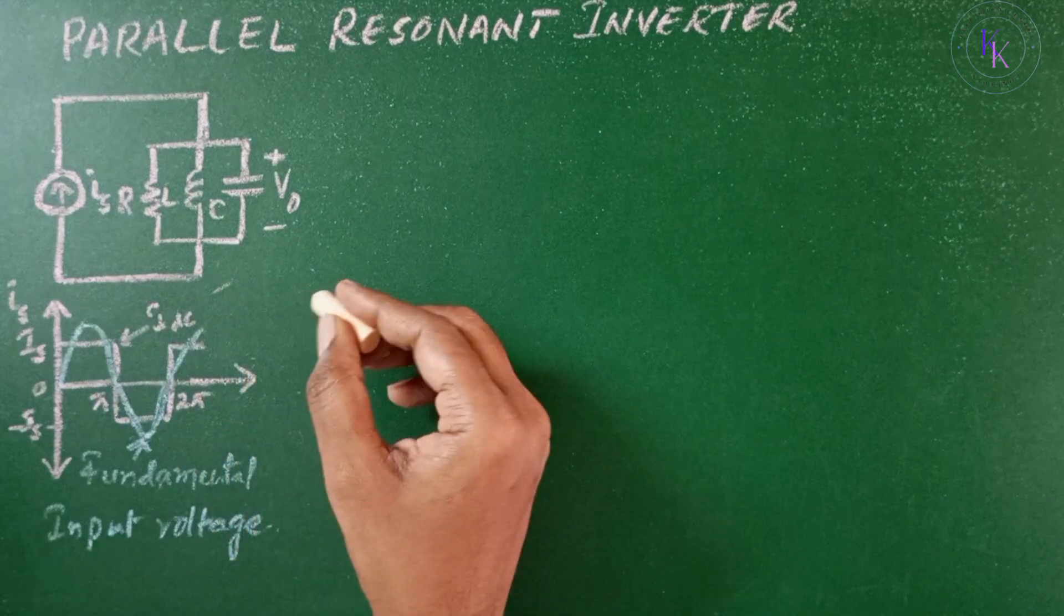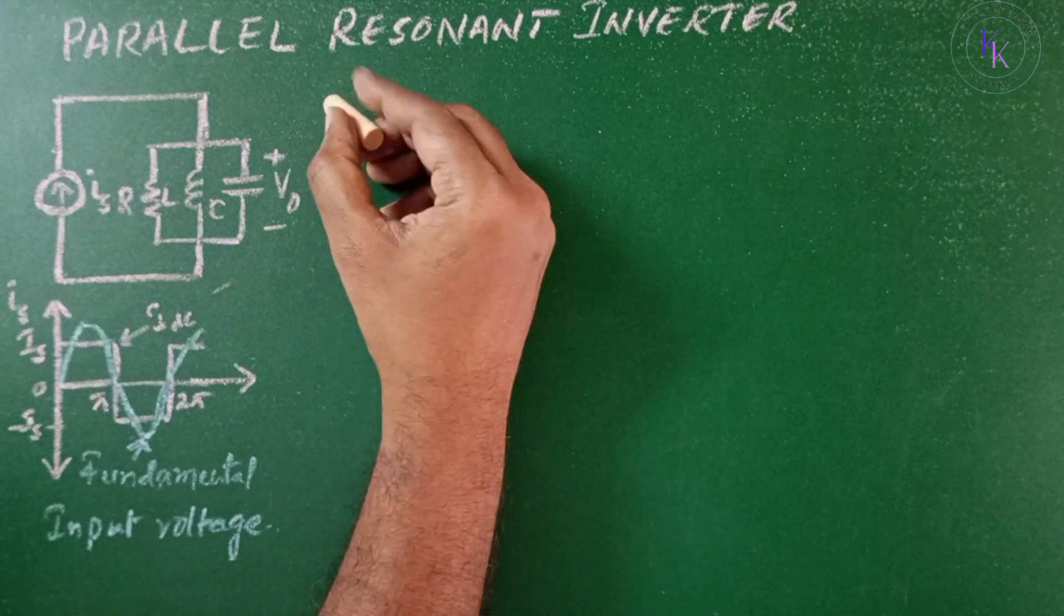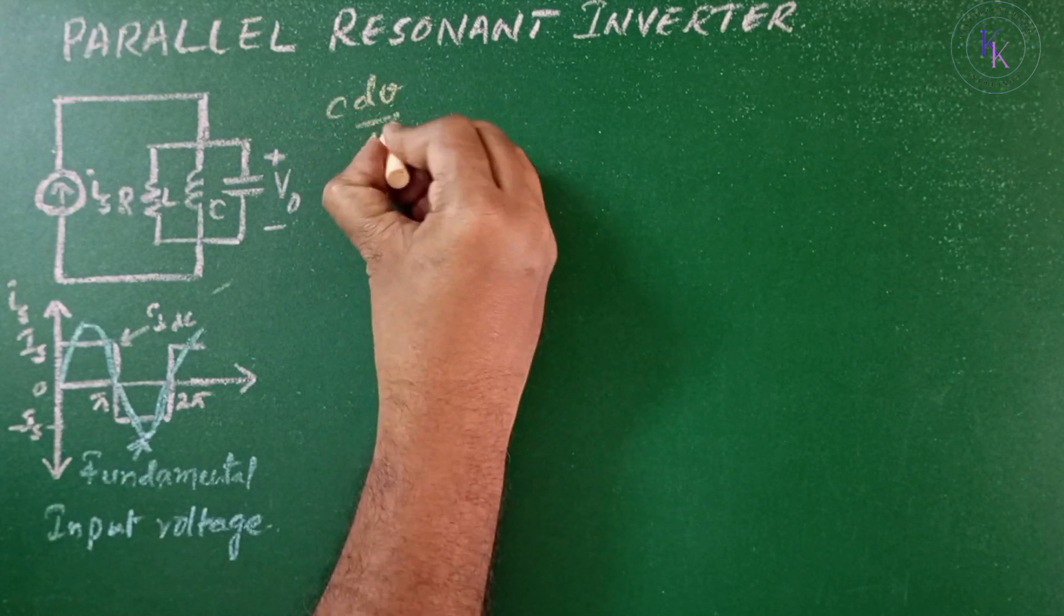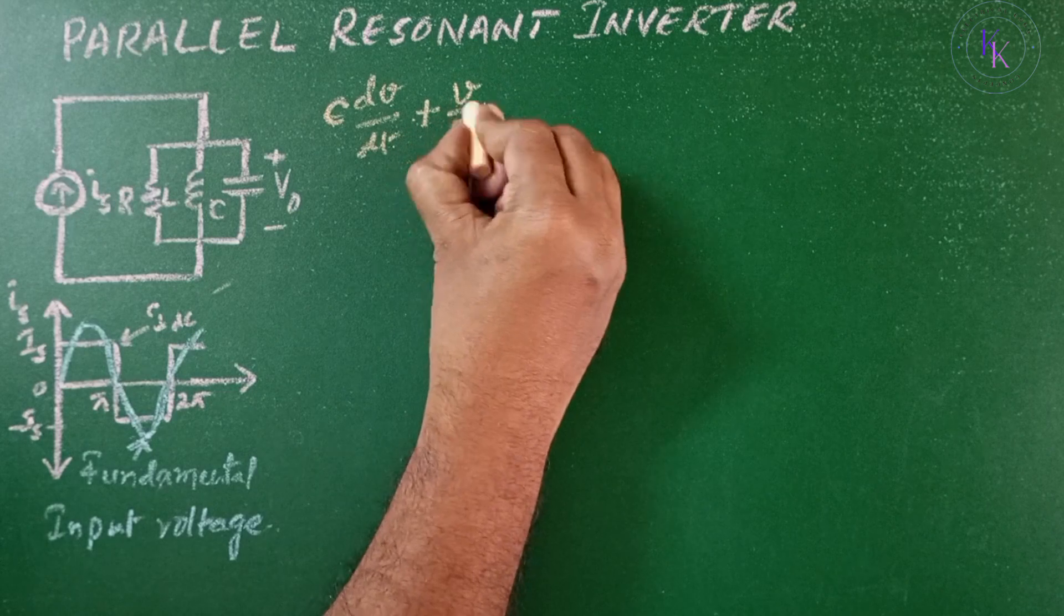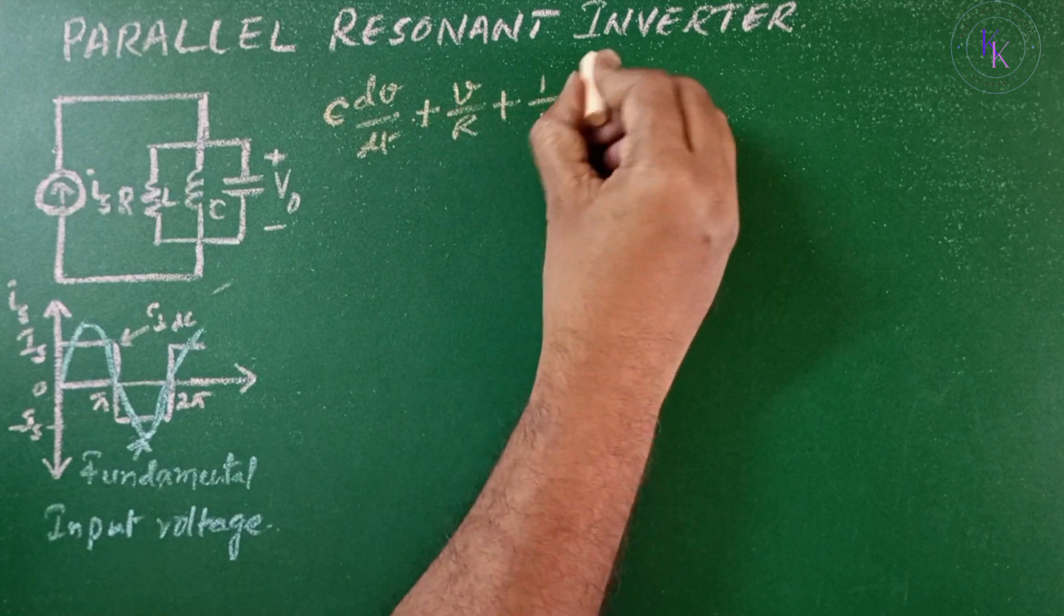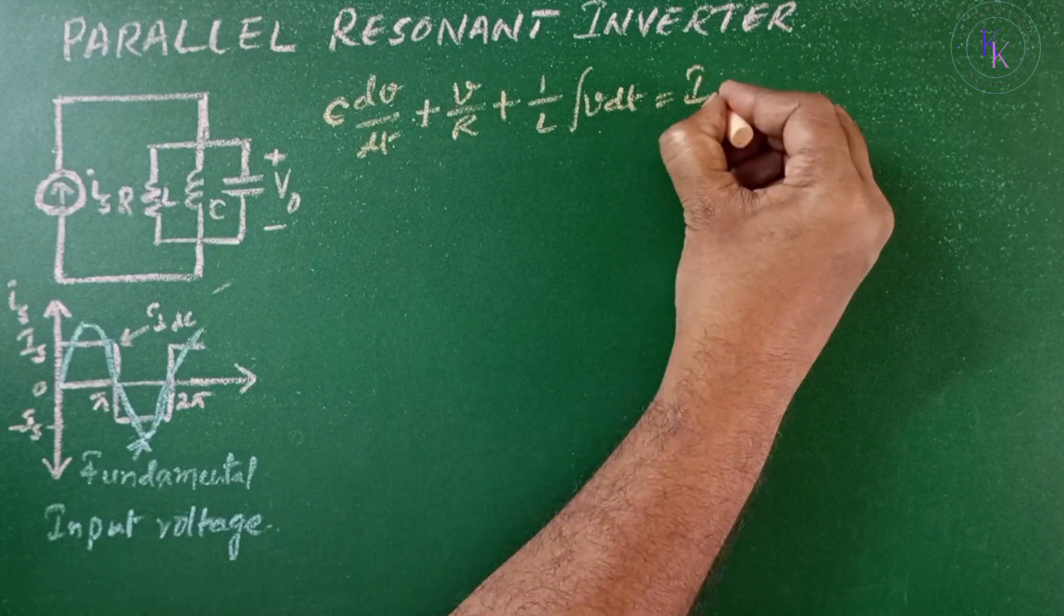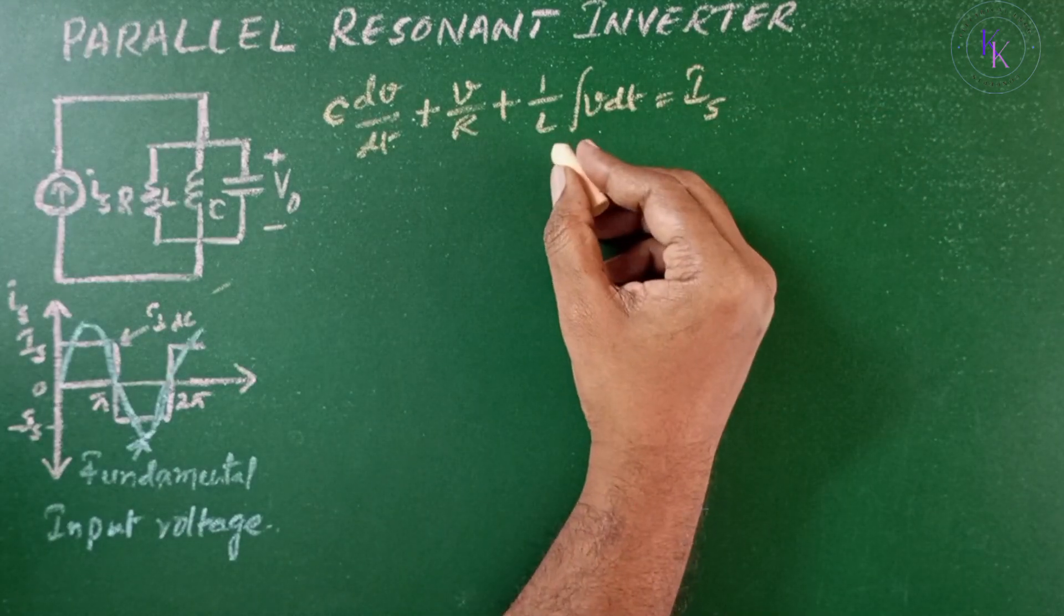Now summing the currents through RLC, we get C dV/dt plus V/R plus 1/L integral V dt equals the input current Is.